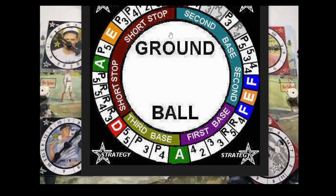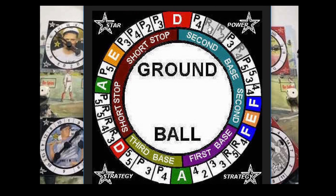With nobody on base, you'll spin the ground ball card and you'll spin an error spin — that's the first spin you do. If it lands on either E space, either one of those orange E spaces, that is an error. Then we will spin once again — it'll be a one-base error. Then we will spin once again to determine who the error is on: it'll be on short, second, first, or third. When it lands on one of those, that's who you charge the error to. Put your base runner on first base. That's with nobody on base.